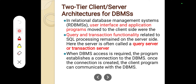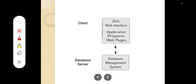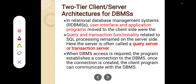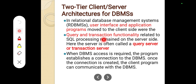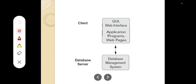In two-tier client-server architecture, the client side will have graphical user interface and application programs. In relational database management systems, the user interface and application programs are moved to the client side. The query and transaction functionality related to SQL processing remains on the server side. The databases are available in the database server, and the transaction and query processing is called the database server.